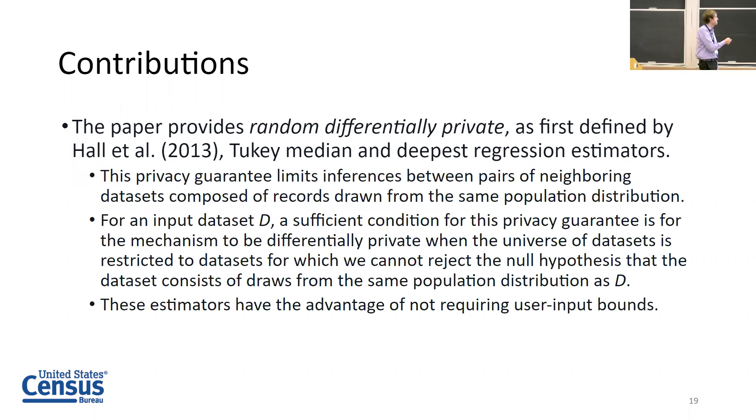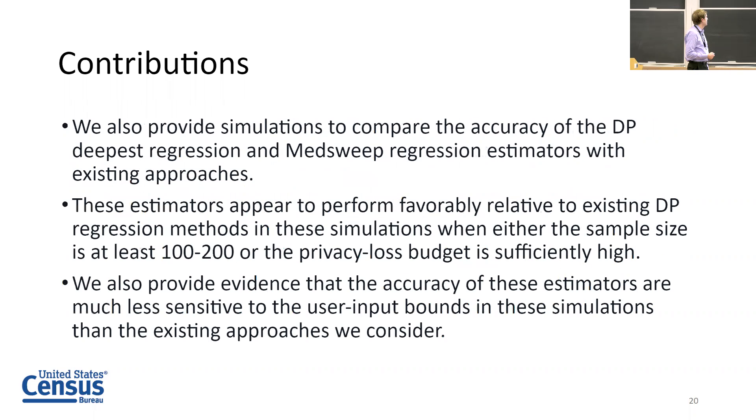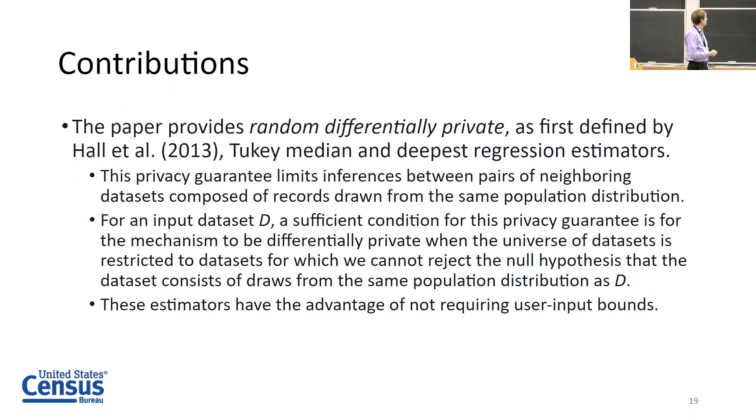The paper also provides random differentially private mechanisms, which is a relaxation of differential privacy provided by Hall et al., for the Tukey median and deepest regression estimators. I have a little bit of information on this privacy guarantee here.